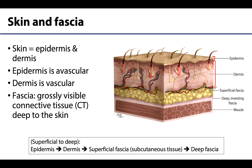Deep to the skin we get into the fascial layers, so now is the time to define fascia. Fascia is any grossly visible connective tissue collection or sheath deep to the skin. Gross here does not mean disgusting, but visible to the naked eye. You are taking a gross anatomy course, not a histology course, so that is what we mean by gross.